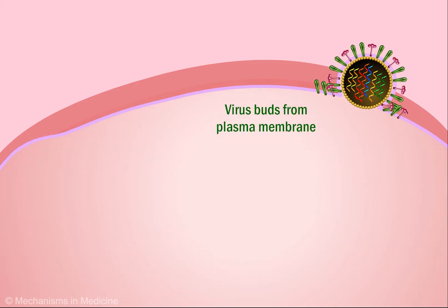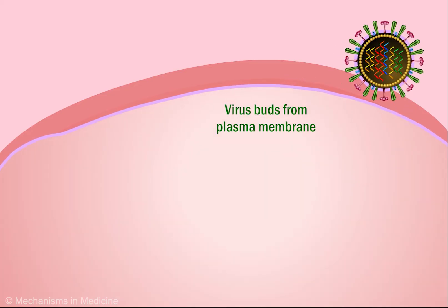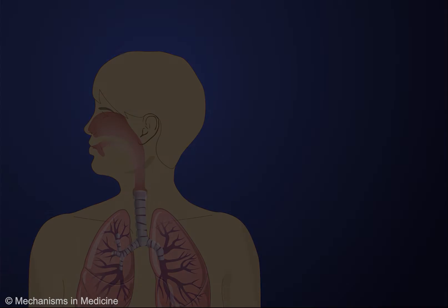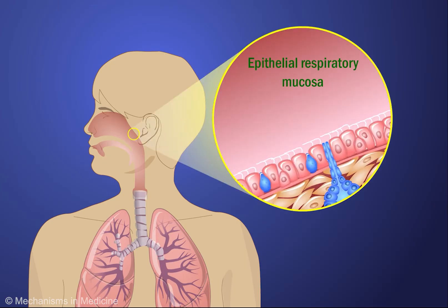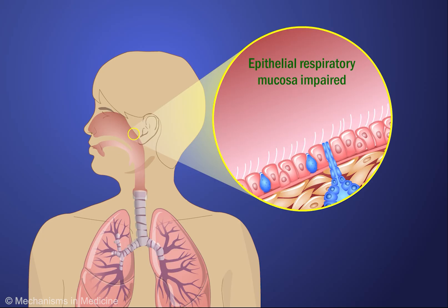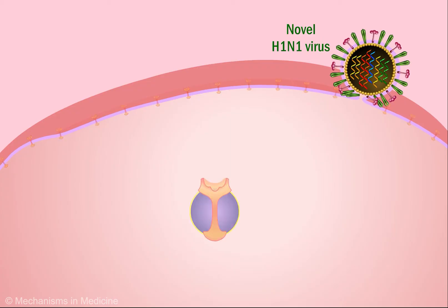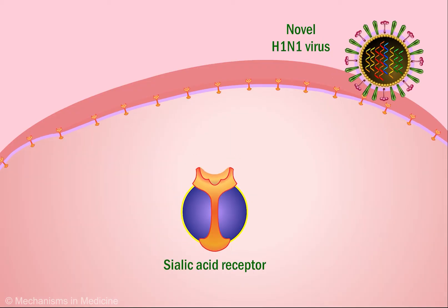The virus then buds from the plasma membrane to be released into the extracellular space where it is capable of spreading the influenza infection. Damage caused by the virus to host epithelial cells during this process is partly responsible for the impaired function of these cells, resulting in symptoms such as reduced mucociliary clearance.